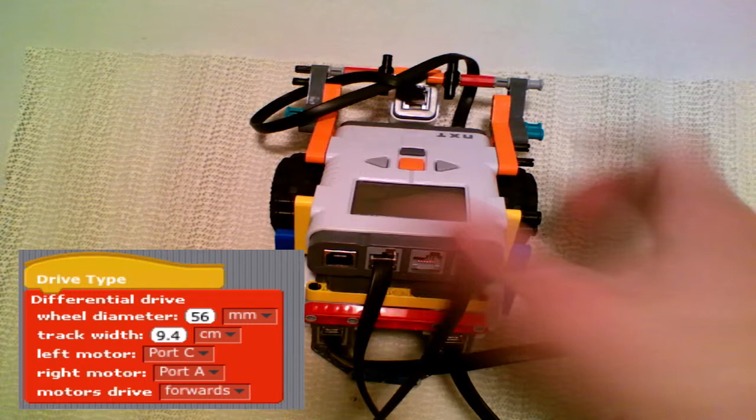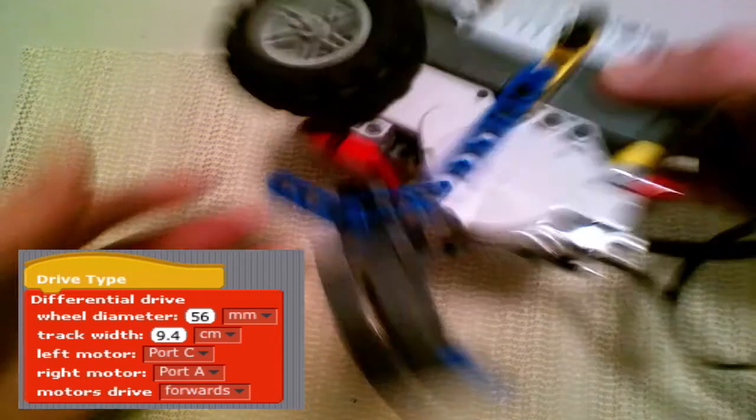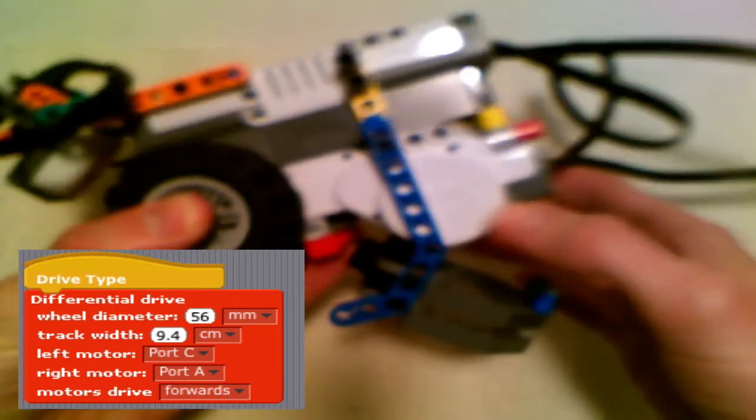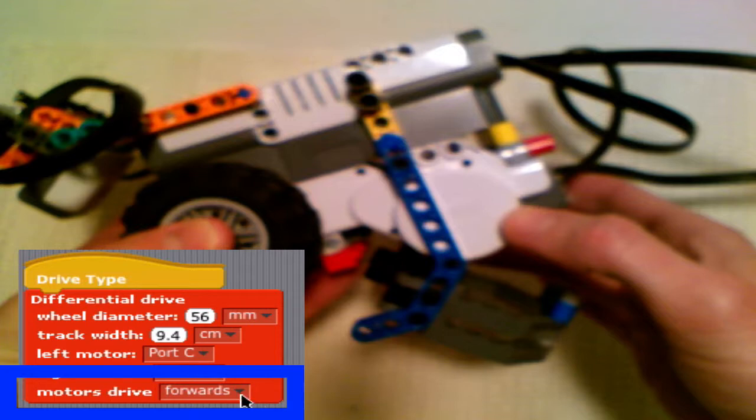Lastly, you need to know if the motors drive forward or in reverse. A great many models have it such that the motors drive forward and the robot drives forward. But if you look at the arrangement here, this one drives in reverse to drive forward. The motors go backward to make the robot go forward.